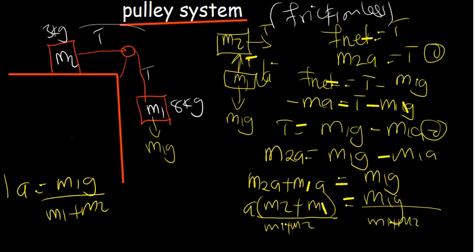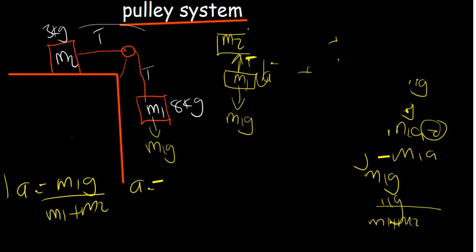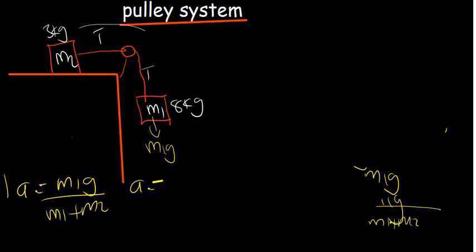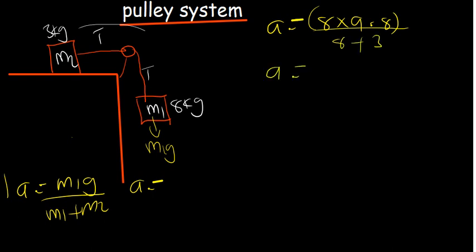Plugging in the values: a = (8 × 9.8) / (8 + 3) = 78.4 / 11 = 7.12 m/s². That is the acceleration for the frictionless case.